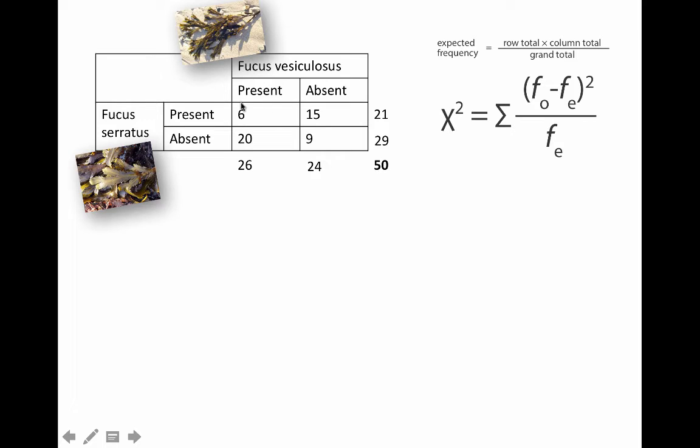If I want to calculate the expected frequency for this box, then what I need to do is multiply 21, which is the row total, by 26, which is the column total, and divide that answer by 50, and it turns out if I do that, I get 10.92. Do that same thing over here: 21 times 24 divided by 50—oops, I did the wrong box—then I get 10.08. Repeat the same process here. Now I have my expected frequencies, which are here in red, and then my observed frequencies, which were the actual data that I collected, are here in black.